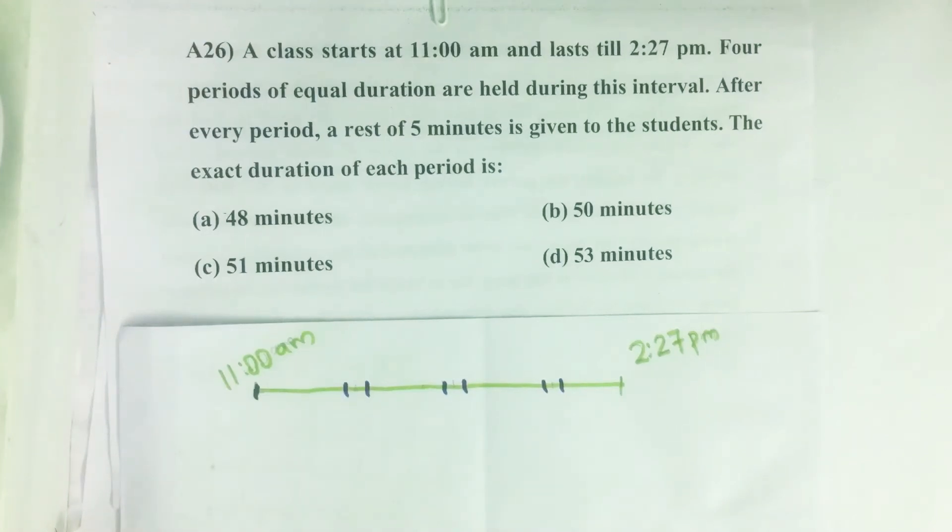Hello everyone, here I am going to solve 2016 CSAT question number 26 from question paper series A. A class starts at 11 a.m. and lasts till 2:27 p.m.